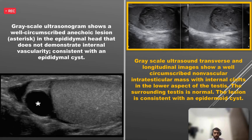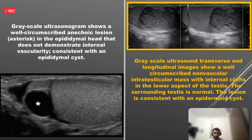In the next images, the first shows a well-circumscribed anechoic lesion with posterior acoustic enhancement — an epidermal cyst with no vascularity on Color Doppler. The second image shows a well-defined lesion with a lamellated appearance; it is non-vascular and the most common benign intratesticular mass — an intratesticular epidermoid, also known as a keratocyst due to its high keratin content. Enucleation is usually sufficient surgical treatment.